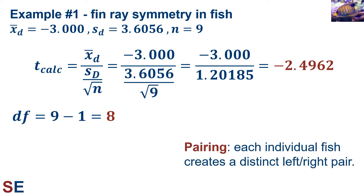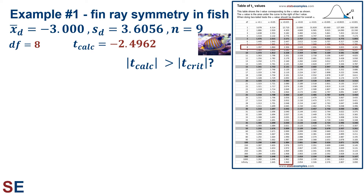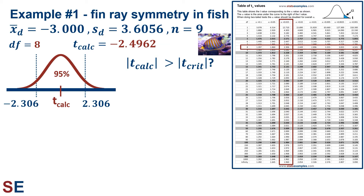It's important to confirm what allows us to use the paired t-test: each individual fish creates a distinct left-and-right pair that pairs with one another but not with any other values. We compare our t-calculated value to the t-distribution. For 8 degrees of freedom at an overall alpha of 5% (two-tailed, so α=0.025 per tail), the critical value from the t-table is 2.306, meaning the middle 95% runs from −2.306 to +2.306. Our value of −2.4962 is smaller than −2.306, placing it outside the center region, so we reject the null hypothesis of equal means.